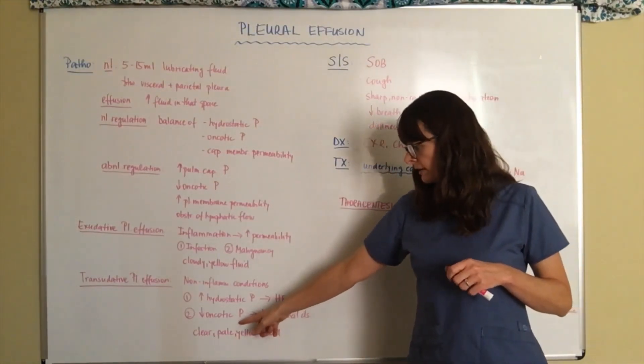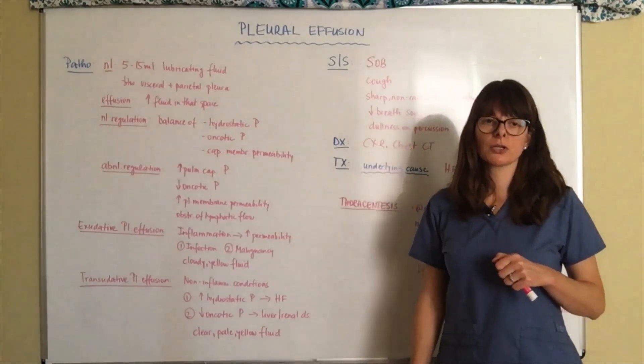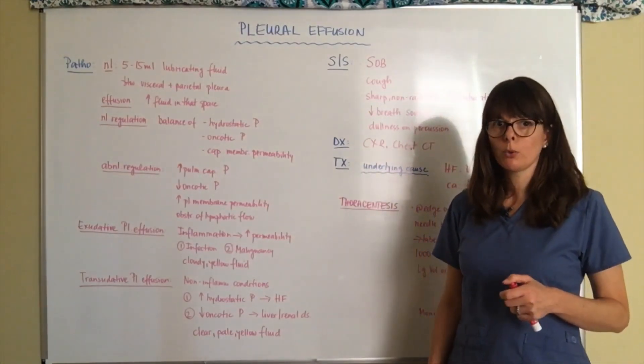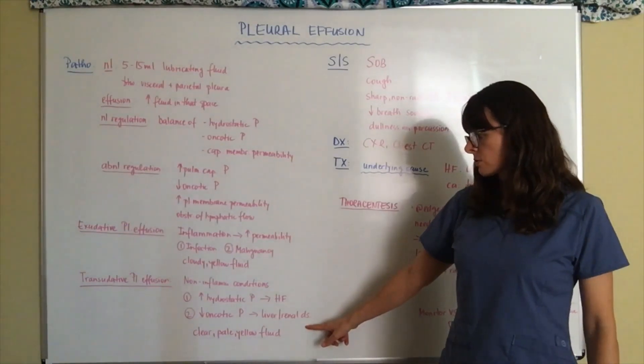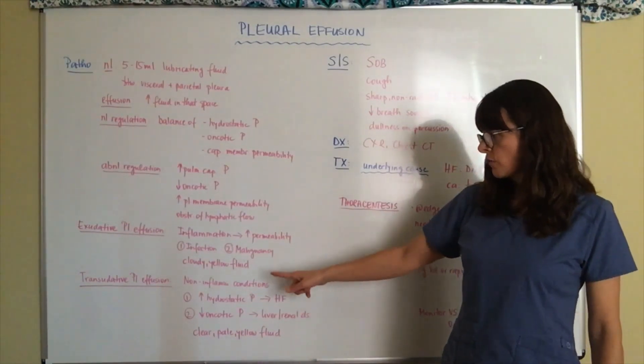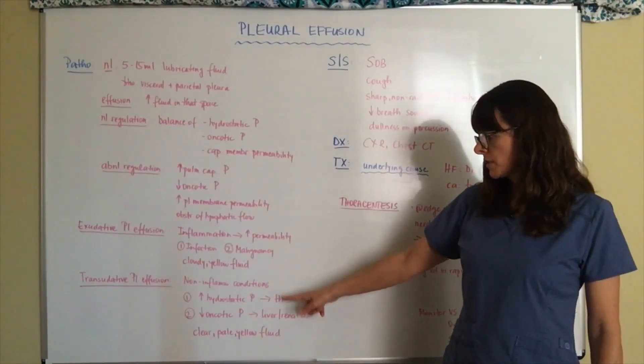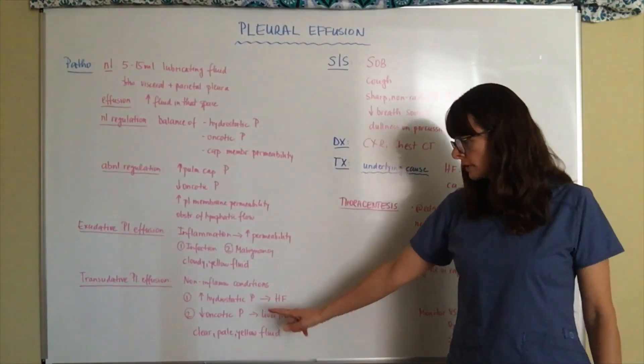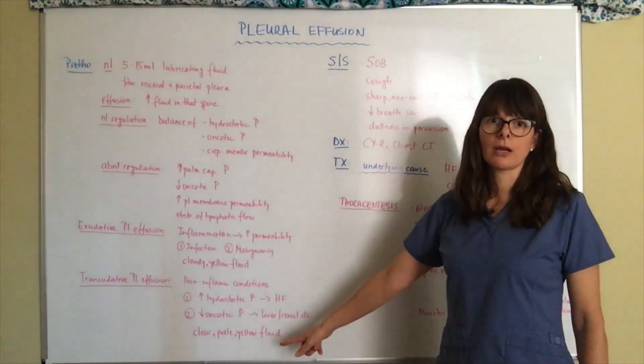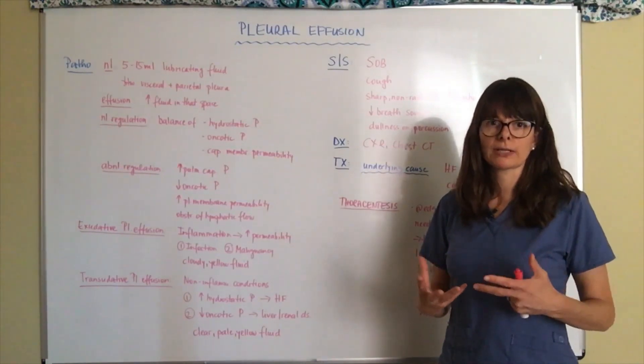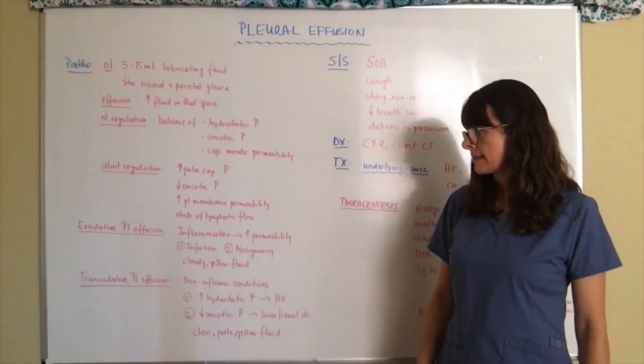As well as when we have decreased oncotic pressure, so decreased blood albumin, usually because of liver and renal disorders, we'll have transudative pleural effusions. And that fluid is usually clear and very pale yellow, not so inflamed or infected looking as in the exudative.